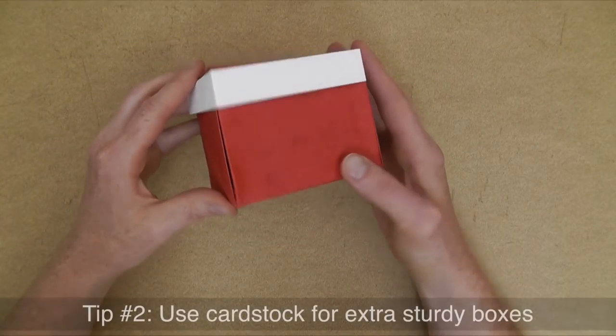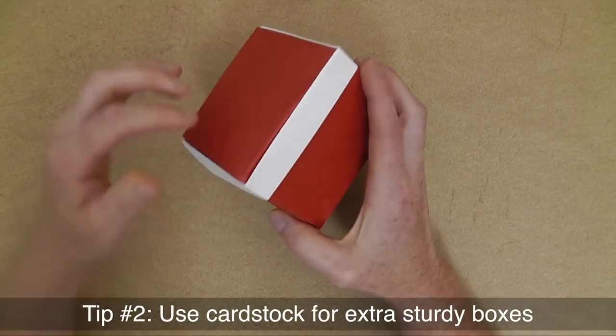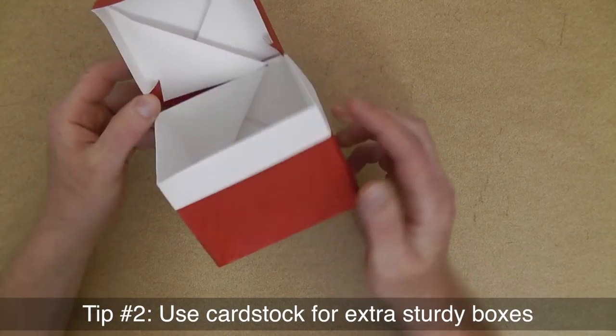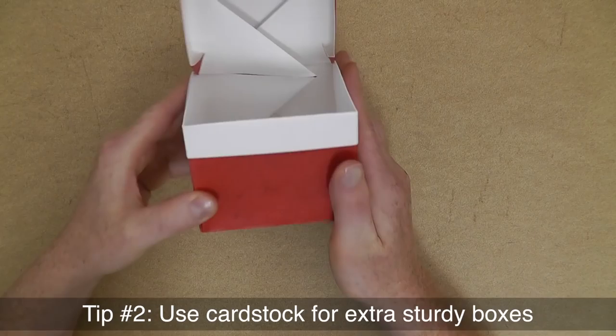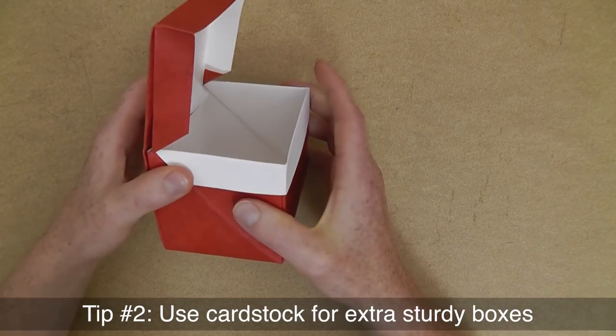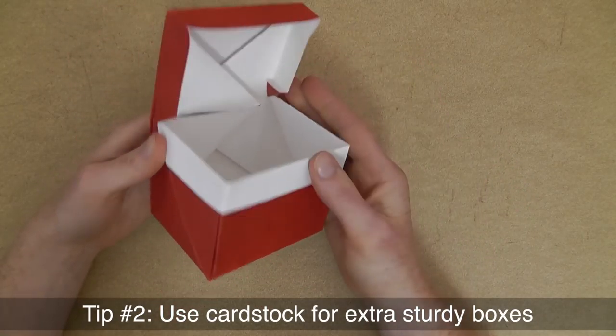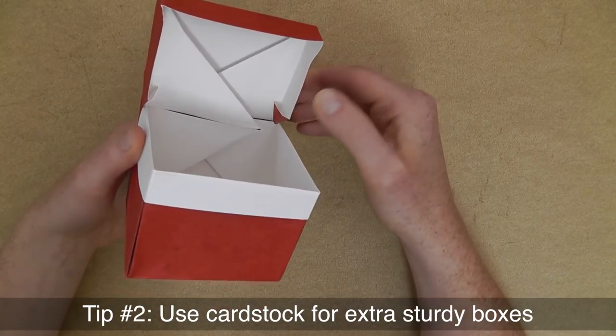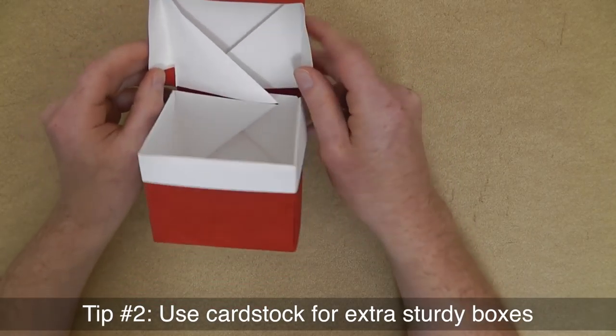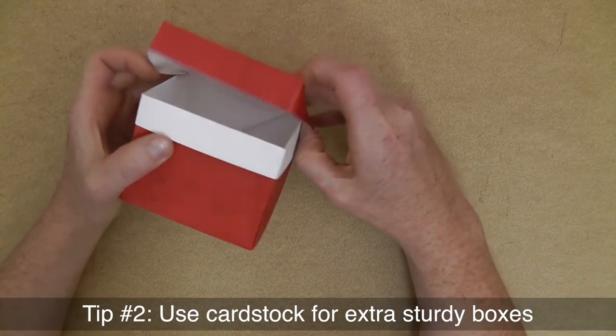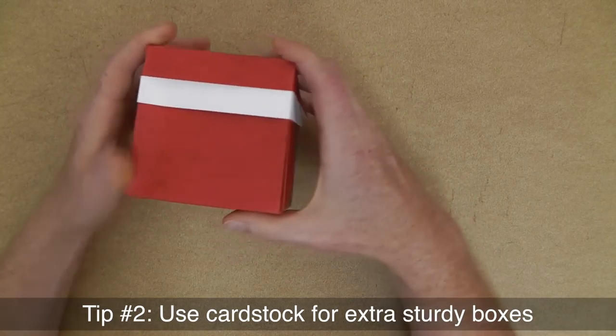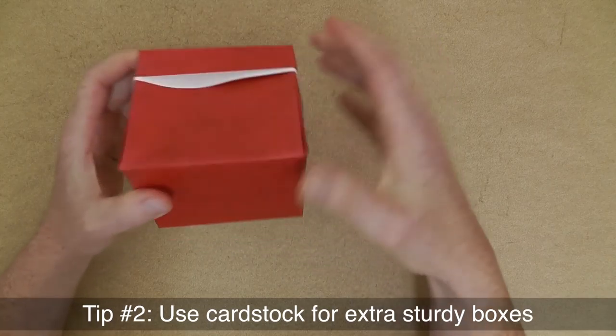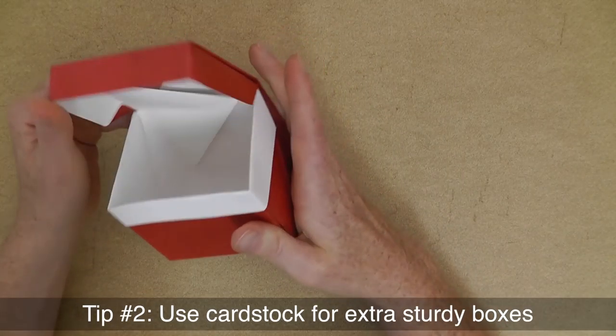Tip number two is use cardstock. If you want a very sturdy box, try using very thick paper and it makes the box really sturdy. Now one thing I will notice if you're using quite thick material, like cardstock, it might be difficult to close the lid all the way without this paper kind of bending in. And I have a trick for that too.